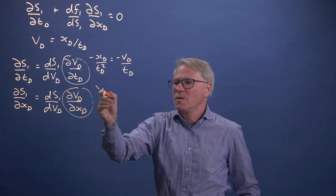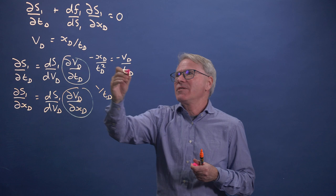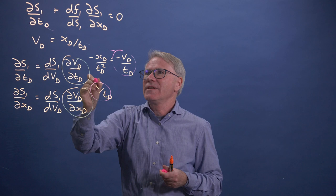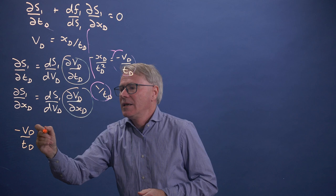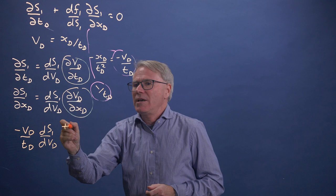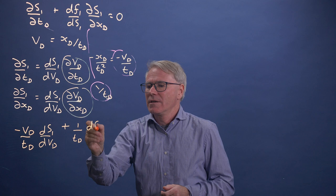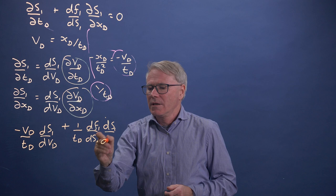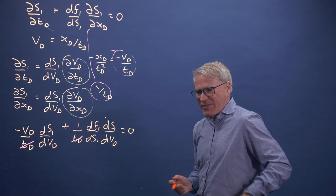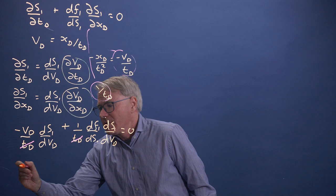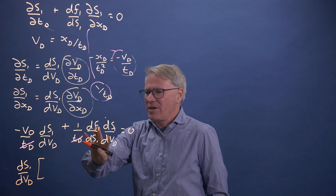So we can put these in the equation here. We're going to have minus VD over tD times dS1 by dVD, plus 1 over tD times dF1 by dS1 times dS1 by dVD equals 0. The tD's cancel out, as they have to, and I'm left with what is actually quite a simple equation. I'll write it down at the bottom here: dS1 by dVD times bracket VD minus dF1 by dS1 equals 0.